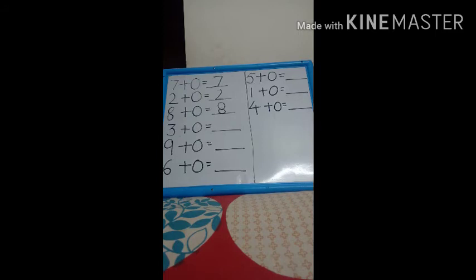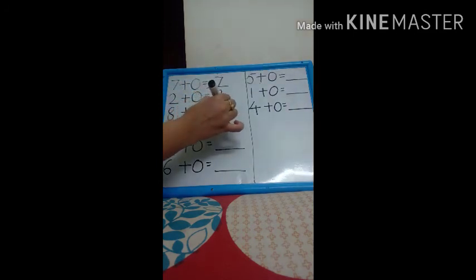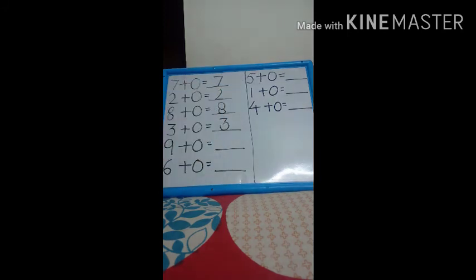Now, next. Who will tell me? This is three. This is plus. This is zero. Should I make lines or add something? The answer is what will be? Three if we add zero to zero, then what will be? Three only. Because when we add any number to zero, what is the answer? The same number.